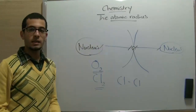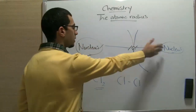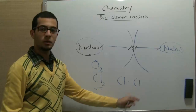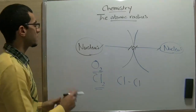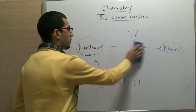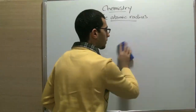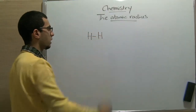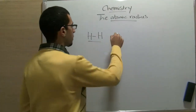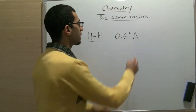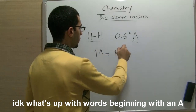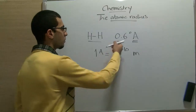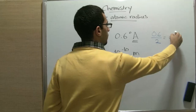So the atomic radius is defined as half the distance between the centers of the two nuclei in a diatomic molecule — a molecule that contains two atoms of the same element. That is how we obtain the atomic radius. For example, in the hydrogen molecule, the distance between the nuclei of the two hydrogen atoms is 0.6 angstrom, where 1 angstrom equals 10 to the power of negative 10 meters. Dividing by two, we get the atomic radius of hydrogen: 0.3 angstrom.